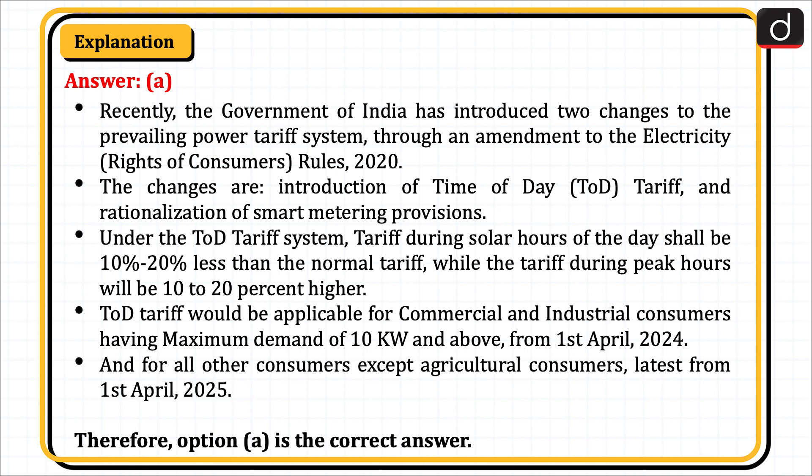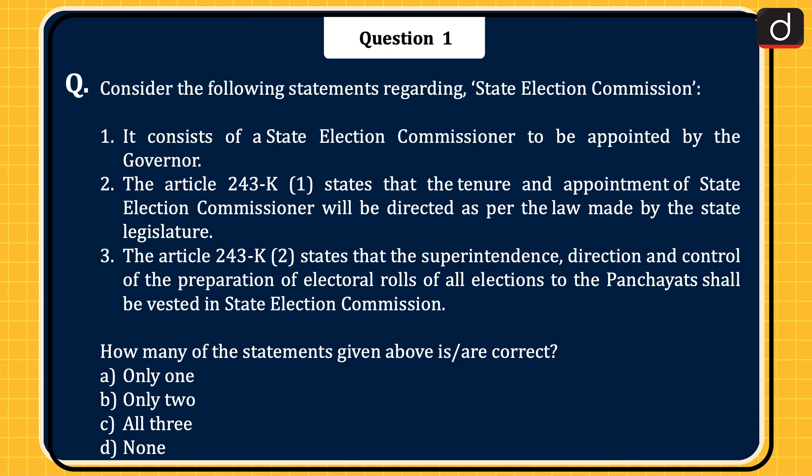TOD tariff would be applicable for commercial and industrial consumers having maximum demand of 10 kW and above from 1st April 2024, and for all other consumers except agricultural consumers latest from 1st April 2025. Therefore, Option A is the correct answer.